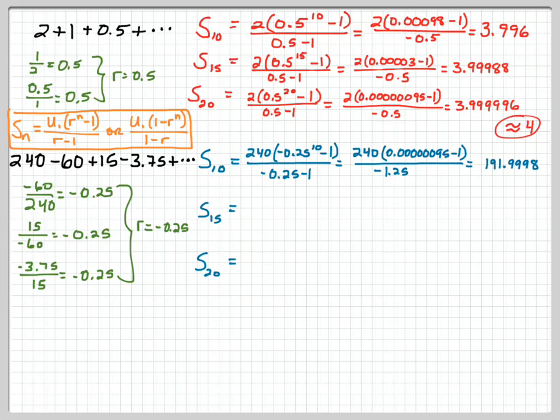Okay, so you probably think you know where this is going, but let's try S of 15 just to be safe. Alright, so we've got 240 times negative 0.25 to the 15th over negative 0.25 minus 1.